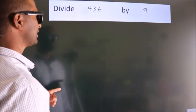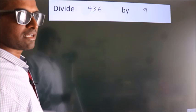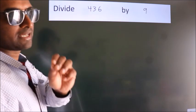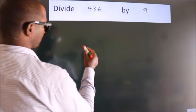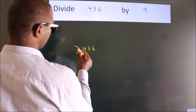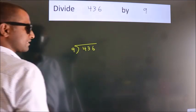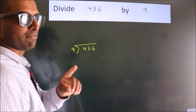Divide 436 by 9. To do this division, we should frame it in this way. 436 here, 9 here. This is your step 1.